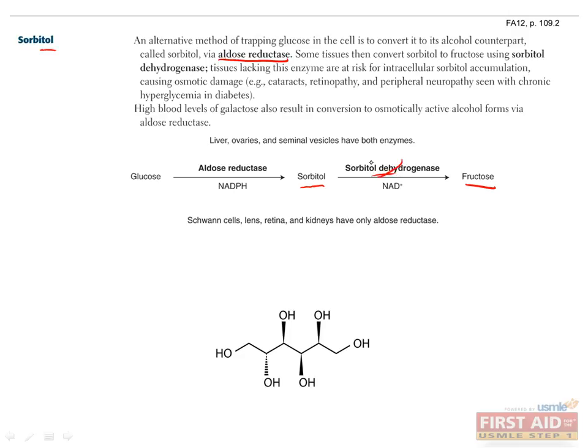However, if a tissue lacks sorbitol dehydrogenase, toxic levels of sorbitol can accumulate, which causes damage because it's osmotically active and pulls water in. In states of persistent hyperglycemia, such as in diabetes, high sorbitol can cause damage to the lens, the retina, the kidneys, and Schwann cells, since these all have only aldose reductase and not sorbitol dehydrogenase.